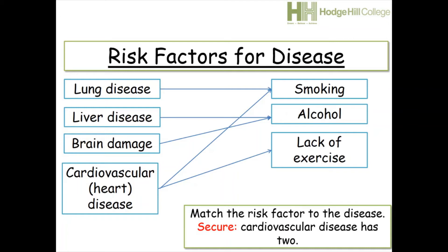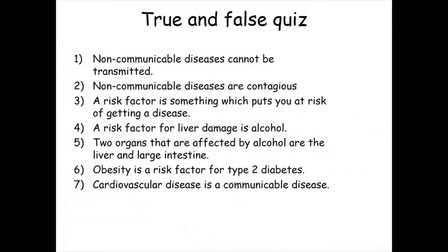Damage to artery linings leads to a build-up of fatty deposits, which can cause a heart attack or stroke. Alcohol in liver disease can damage the liver because it can't filter out the toxins fast enough. It can also damage your brain by causing brain shrinkage, leading to memory problems long term. A lack of exercise puts a strain on your heart, making it work harder for normal activities. Combined with smoking and fatty deposits, this is what can lead to a heart attack.